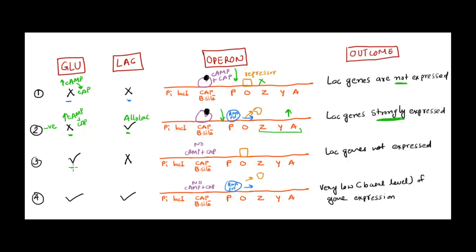Third scenario: only glucose present, no lactose. Glucose is high, so there is a low level of cyclic AMP, which does not bind to CAP — no cyclic AMP–CAP complex at the binding site. There is also no lactose, so no allolactose to remove the repressor. Therefore, lac genes are not expressed — nothing is happening, and this is what the cell wants.